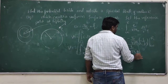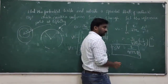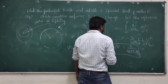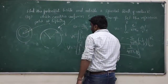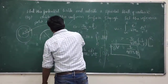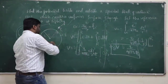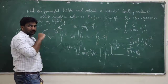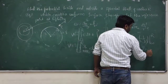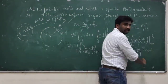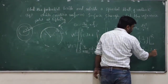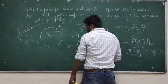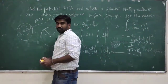Evaluating from infinity to R: the result is q divided by 4 pi epsilon R, times 1 over R. So this is the potential for a spherical shell inside the spherical shell, which comes out to be constant — equal to q divided by 4 pi epsilon R.